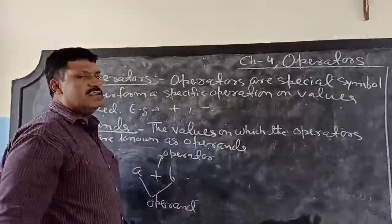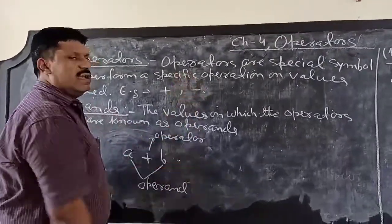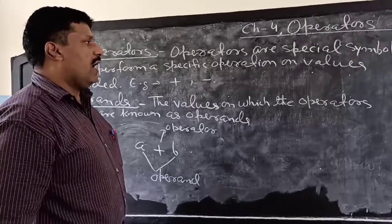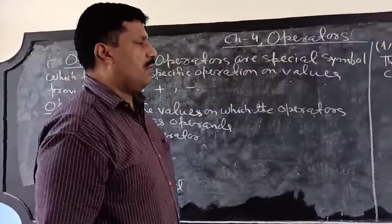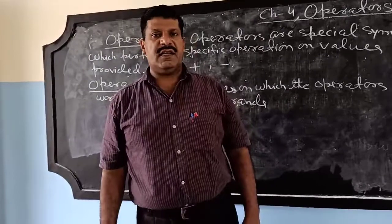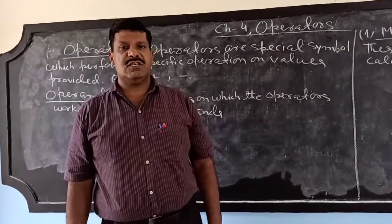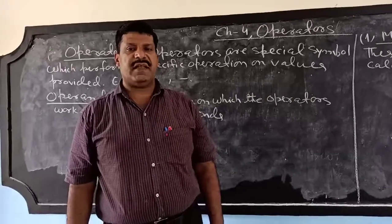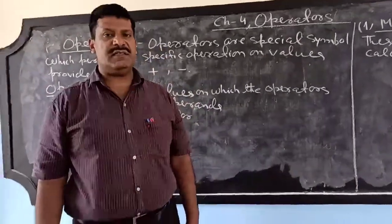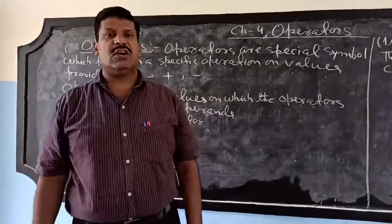The plus sign is used for addition and the minus sign is used for subtraction. We have different types of operators in Java: arithmetic or mathematical operators, relational operators, and logical operators. These are the three main types.